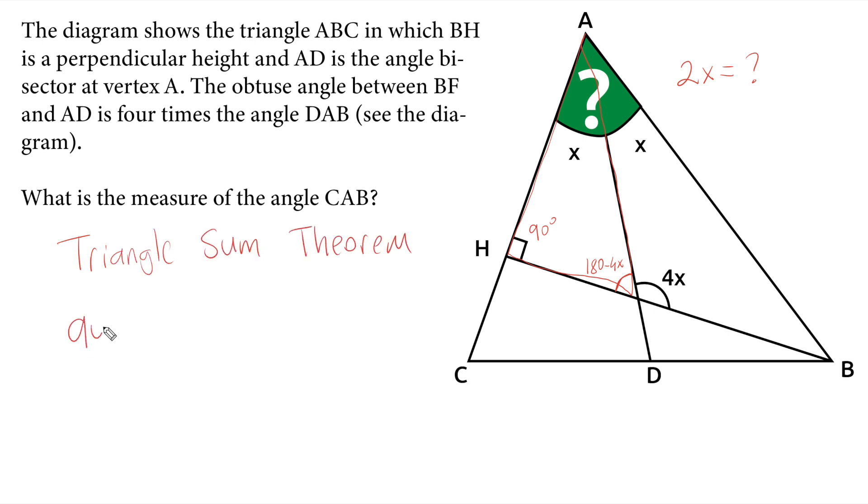So 90 degree plus x plus 180 minus 4x must be equal to 180. 180 and 180 cancels in each side. Like terms with x and negative 4x makes 90 minus 3x equals 0. We add 3x to both sides. 90 equals 3x and we divide each side to 3. x equals to 30.